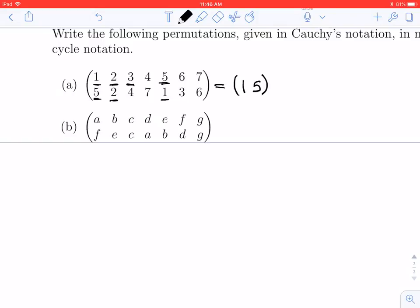Next thing, how about 3? 3 goes to 4, so we can start writing that. 3 goes to 4. Where does 4 go? 4 goes to 7. Where does 7 go? 7 goes to 6. And 6 goes back to 3, so we can close off that cycle.